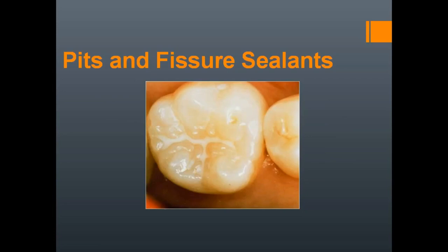Welcome back to a new session on dentistry, specifically pits and fissure sealants. In this topic, I'll be explaining the various steps involved in pits and fissure sealants, its classifications, indications and contraindications, and why it is important in preventing dental caries. We have seen this under levels of prevention — level one, that is primary prevention — where we seal the pits and fissures so that caries will not occur.